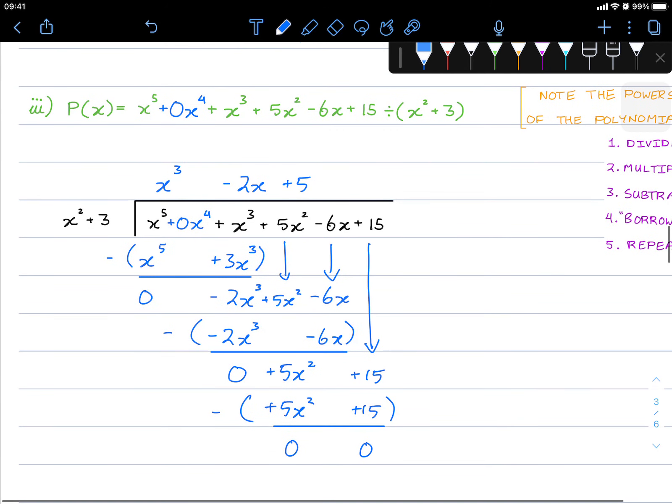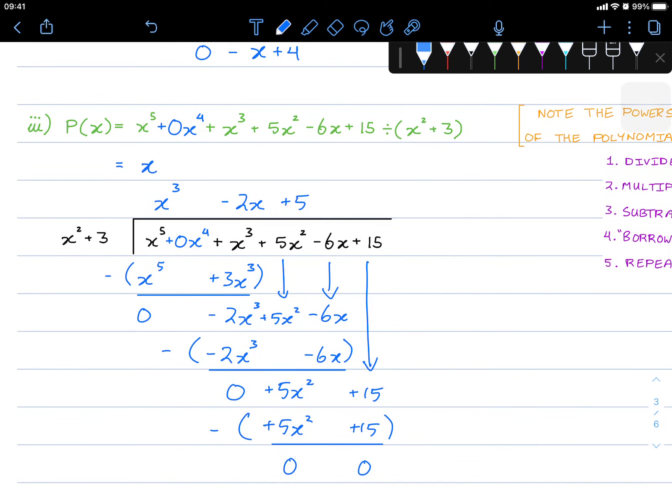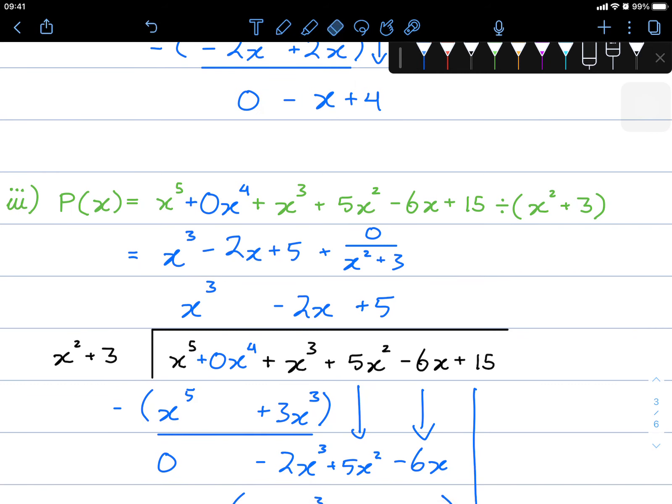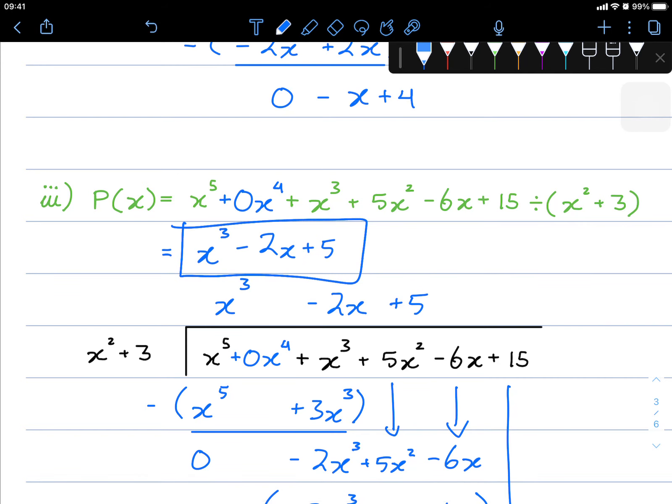So when we divide, we do this division. We're actually left with just x cubed minus 2x plus 5 plus 0. Because our remainder is 0. 0 over x squared plus 3. But since it's 0 over x squared plus 3, we don't need to write it in. So our answer for this division is this here. So we have no remainders.